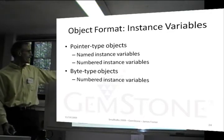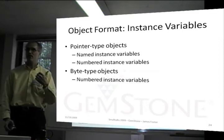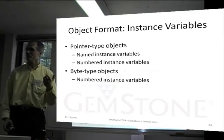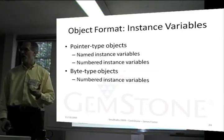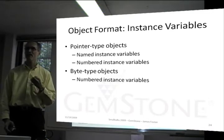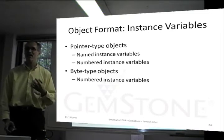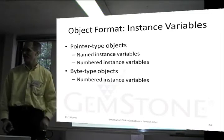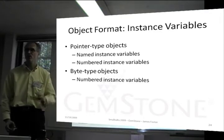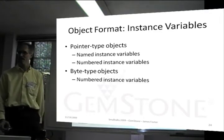In a pointer type, we can have either a special object — a small integer, where it's not really a pointer but the object is included entirely inside the pointer — or a reference to a real object that takes up space.